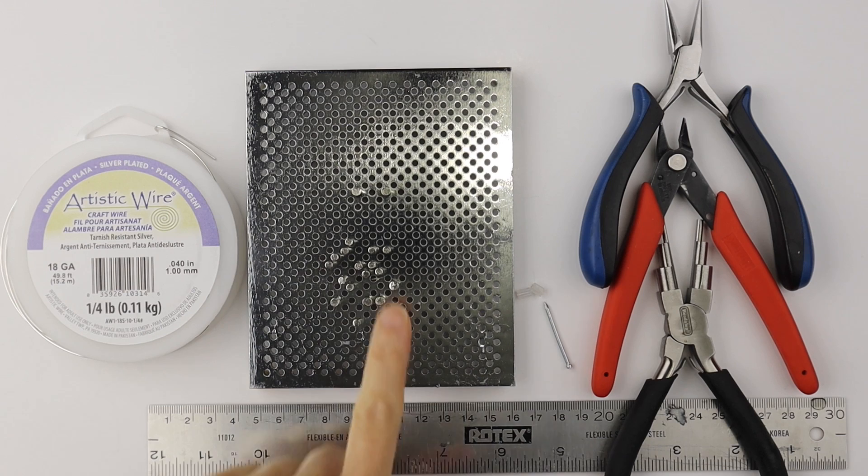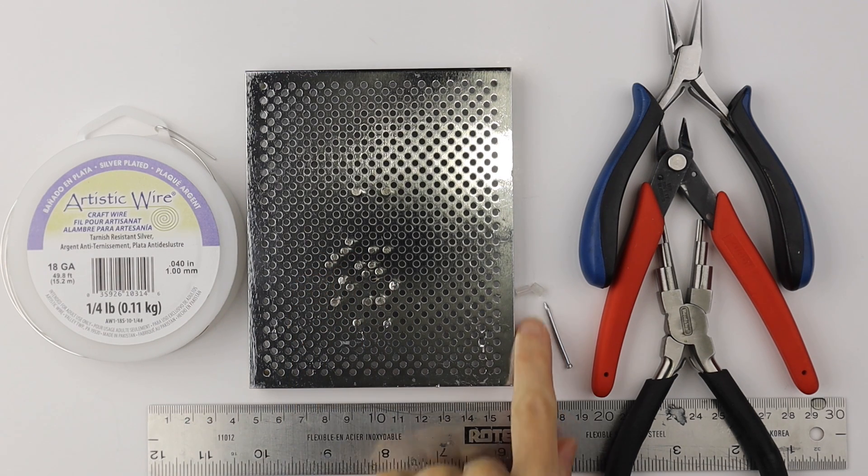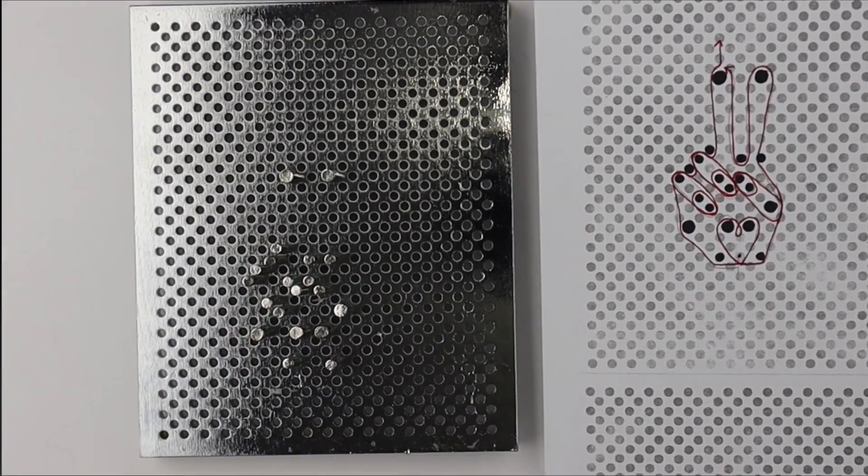We are using 18 gauge wire, the Artistic Wire Deluxe Jig Kit. You'll need the plugs, you'll need your tools, and a ruler.